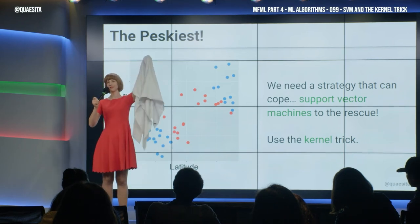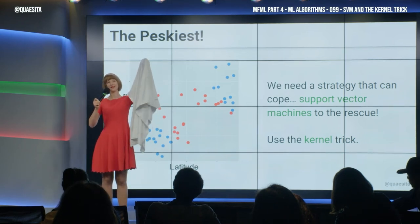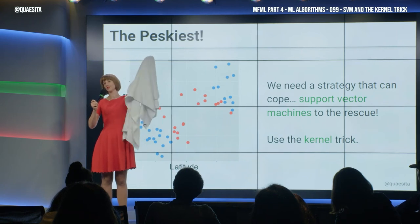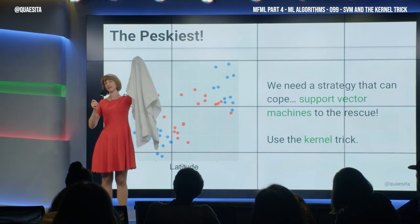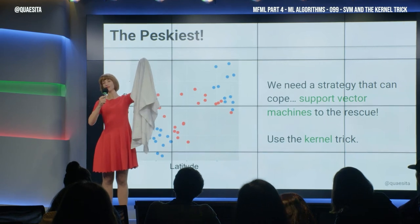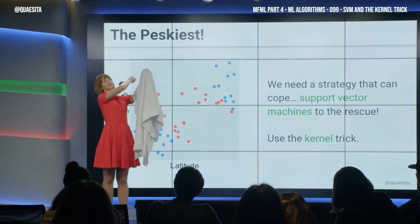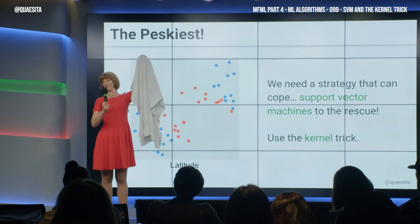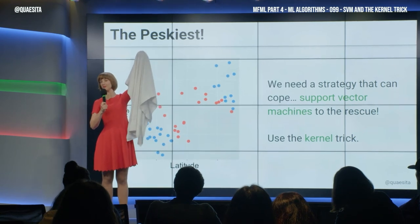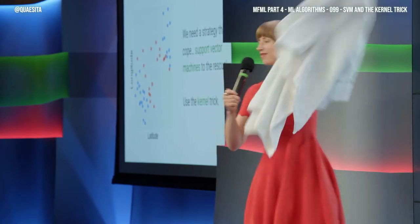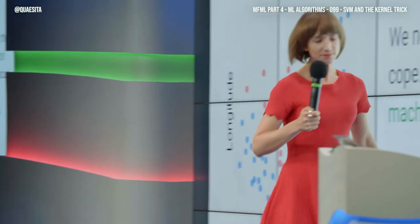And what you do is you punch the space, adding an extra dimension and converting your other axis, and now I can use a plane to decapitate this thing because the red is now above the blue. So that is what the kernel trick is.